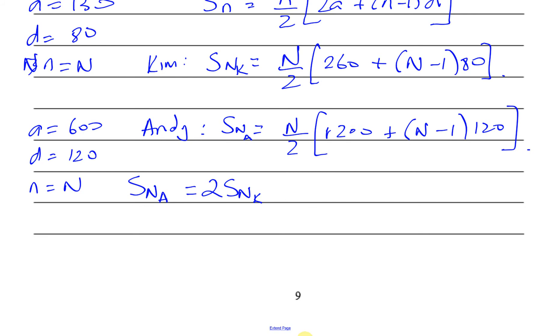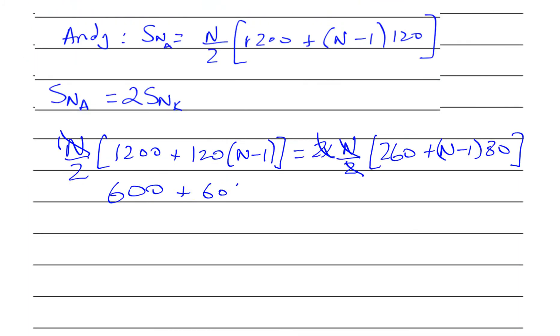We can solve this for N. The 2 cancels with the 2, the N cancels with the N. We have half of all of this, so 600 + 60(N-1) = 260 + 80(N-1).